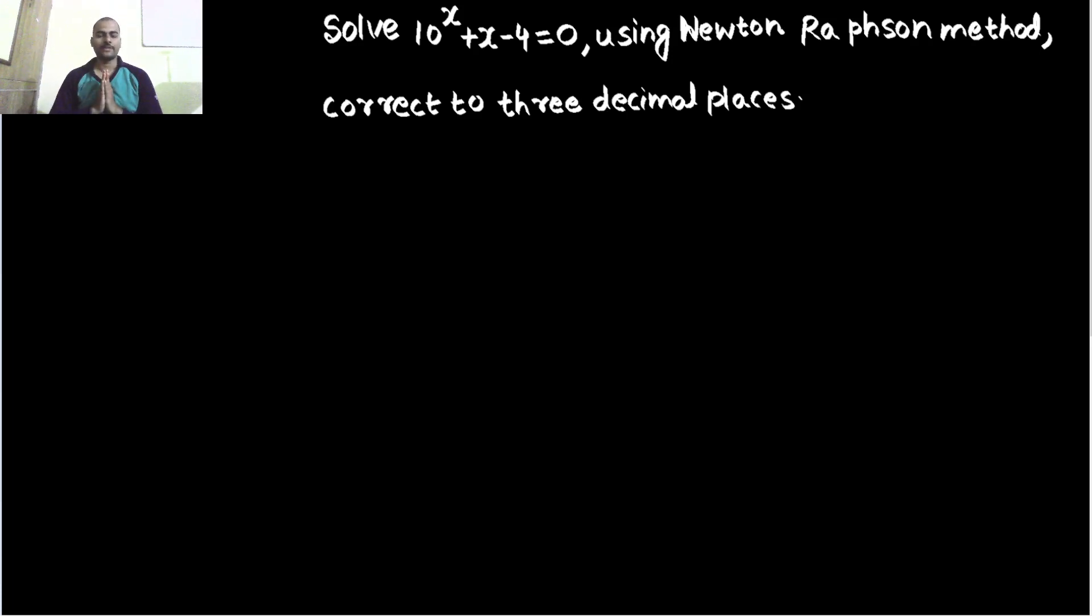Hello everyone, Namaskar, Raj Krishna this side. Let us solve this question. Solve 10^x + x - 4 = 0 using Newton-Raphson method correct to 3 decimal places. This is important, up to how many decimal places and what is the method which we are using. In this case they have mentioned the Newton-Raphson method.